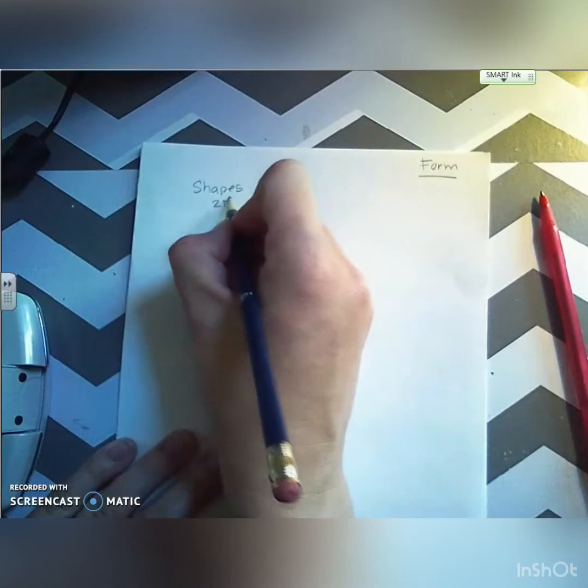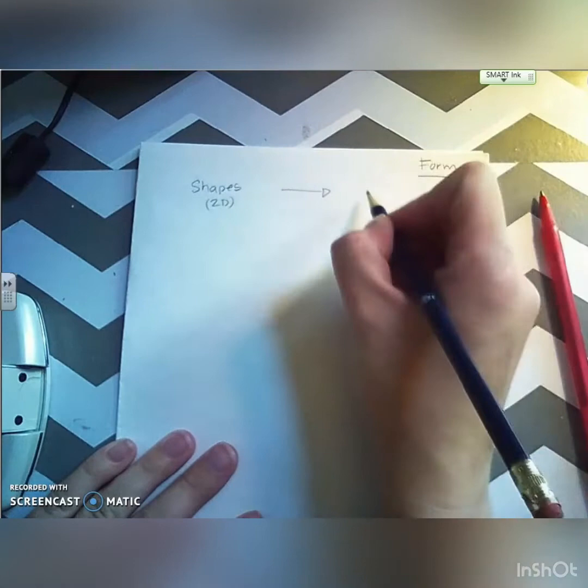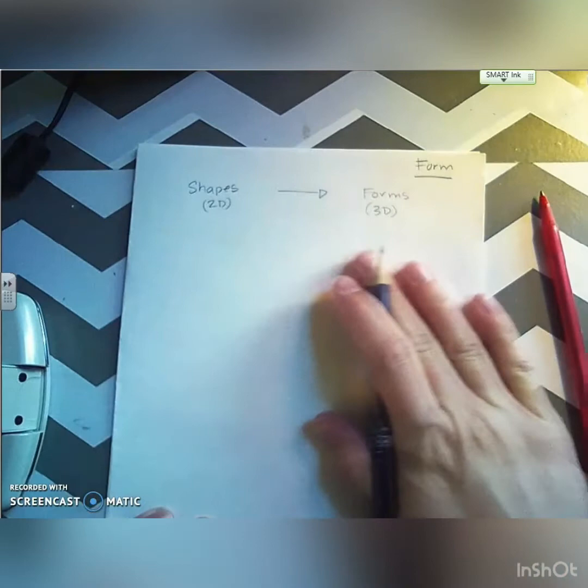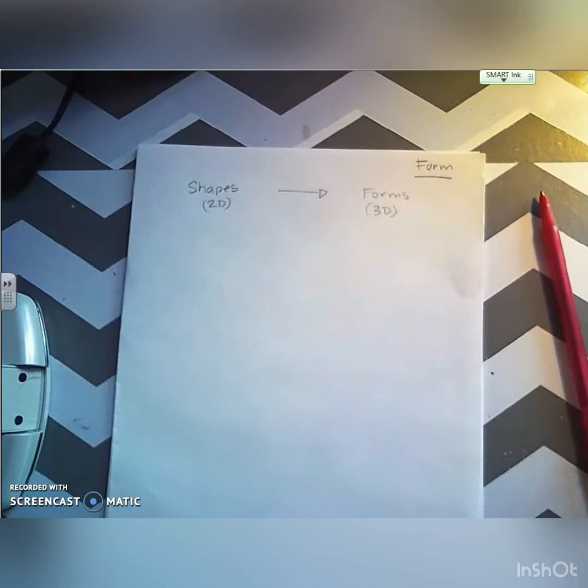Then I would like an arrow. Go ahead and write forms, and write 3D underneath of that. Now it's going to be on flat paper, so it's going to be an implied three-dimensional form, right? We recognize that word implied from when we were talking about texture.